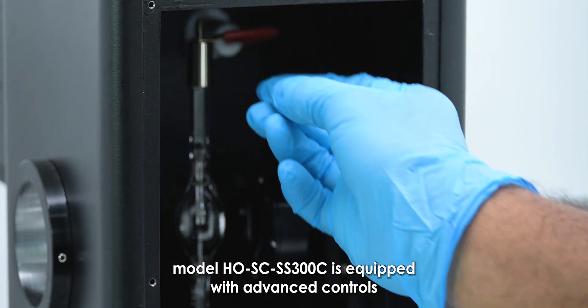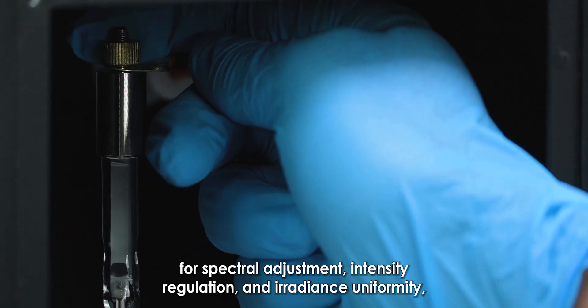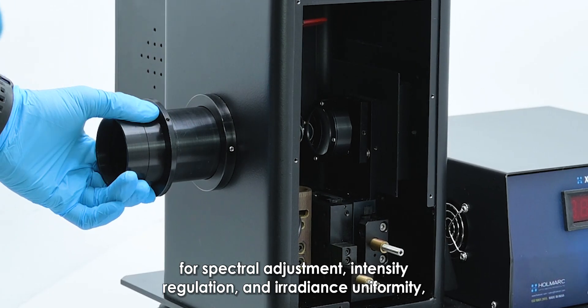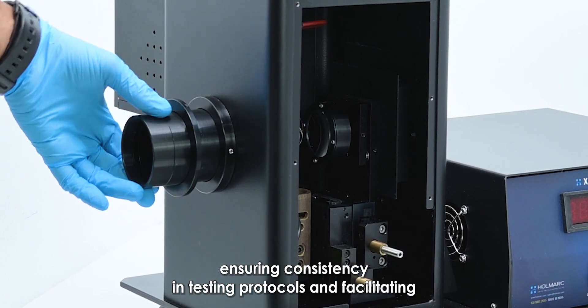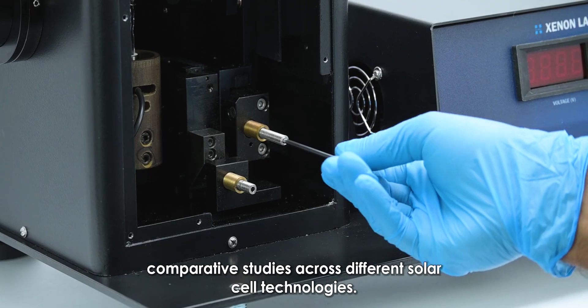Model HO-SC-SS-300C is equipped with advanced controls for spectral adjustment, intensity regulation, and irradiance uniformity, ensuring consistency in testing protocols and facilitating comparative studies across different solar cell technologies.